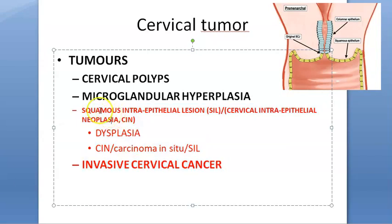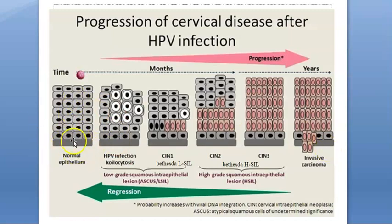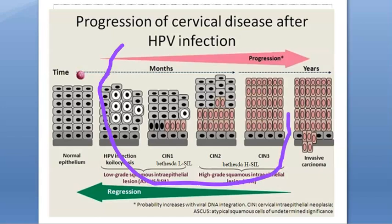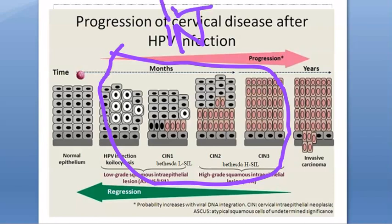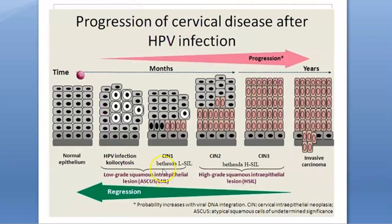First understand that there is normal epithelium. Because of the virus, there are changes within the epithelium. All these changes are called intraepithelial — intraepithelial neoplasm or intraepithelial lesion. Everything here is intraepithelial; finally it becomes invasive. Within intraepithelial you have CIL — cervical intraepithelial neoplasia — and SIL — squamous intraepithelial lesion. Don't get confused; everything is intraepithelial.